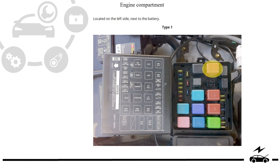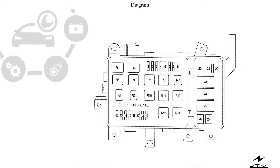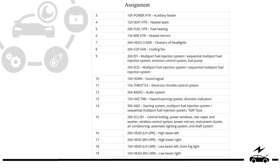Engine compartment fuse box location. Type 1: photo, diagram, and assignment.